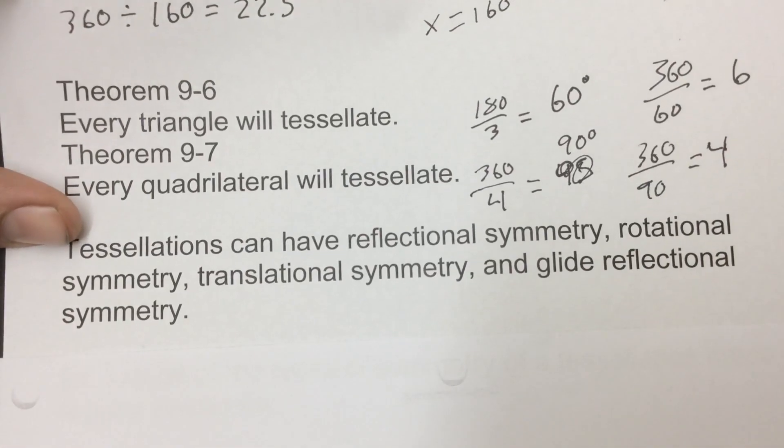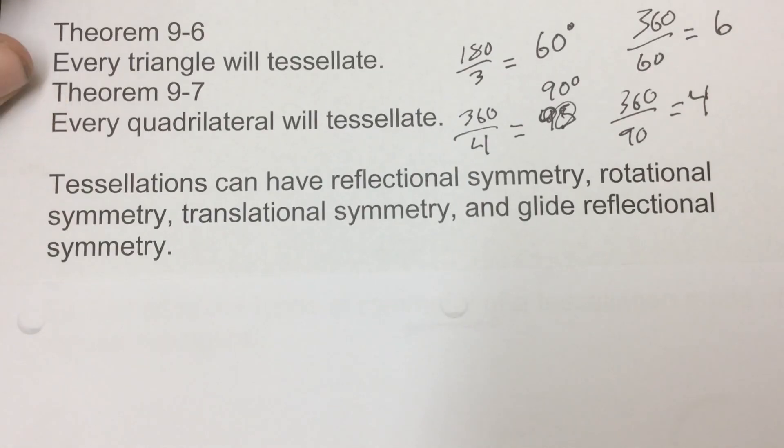Now with tessellations, we can have reflectional symmetry, rotational symmetry, translational symmetry, or glide reflectional symmetry. So what we're really saying is to make a tessellation, we could take it and we could rotate it and have it fit in there and make that tessellation work. We could then take it and reflect it over and have it fit in there and have it work. We could take it and we could have it slide over and it would work. Or we could take it and we could slide it and flip it and make it work. So all of those isometries could be used to make a tessellation.